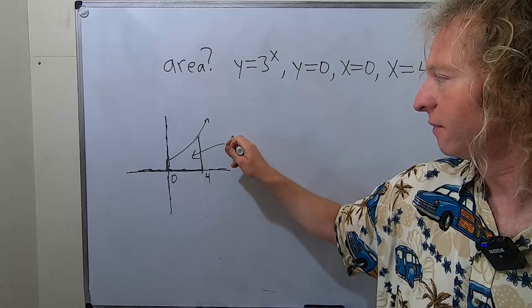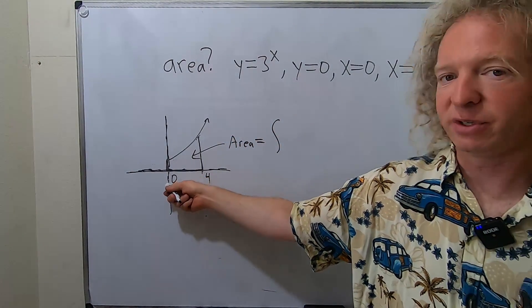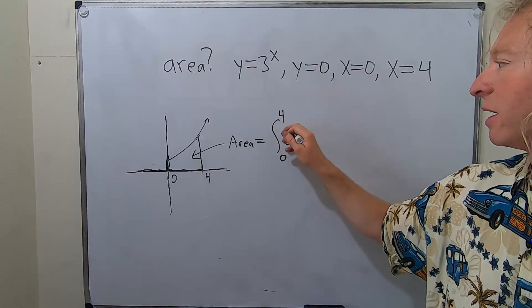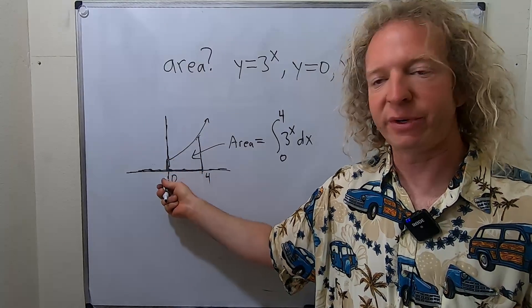So the area here is going to be the definite integral from 0 to 4 of 3 to the x dx. That's going to give us the area. So all you do is integrate this function from 0 to 4.